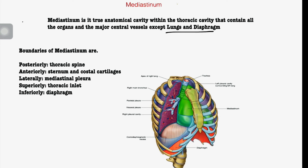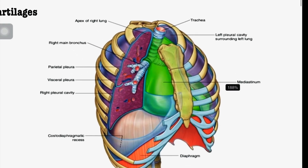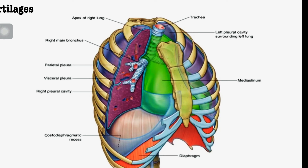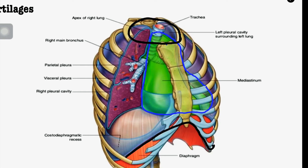The mediastinum has certain boundaries. Looking at these boundaries: superiorly, there is the superior thoracic aperture. Inferiorly, there is the diaphragm along with the inferior thoracic aperture — also known as the thoracic outlet and thoracic inlet.